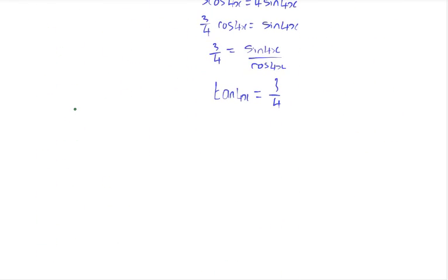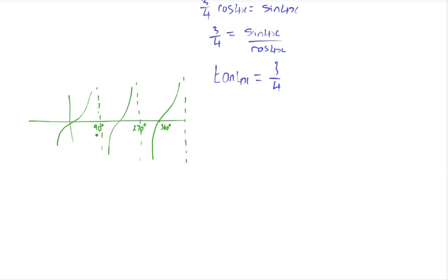Doing a quick sketch of the tan graph. These asymptotes appear every 180 degrees. So this is at 90 degrees, this is at 270 degrees, and this point here is at 360 degrees. In radians, these are pi over 2, 3 pi over 2, and 2 pi. And this point here is 180 degrees, which is pi.